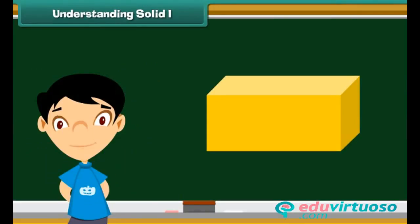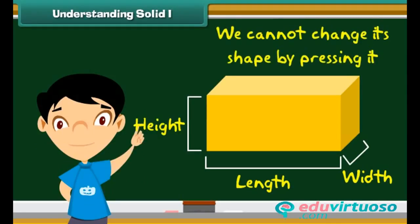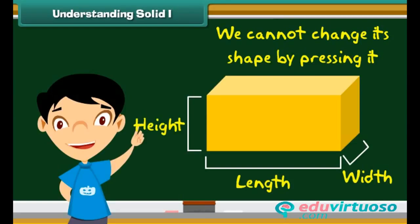Friends, look at this brick. This is a solid. This brick has a fixed shape. It has length, width, and height. It is hard — we cannot change its shape by pressing it. Thus we can say a solid has definite shape and size and cannot be pressed easily.